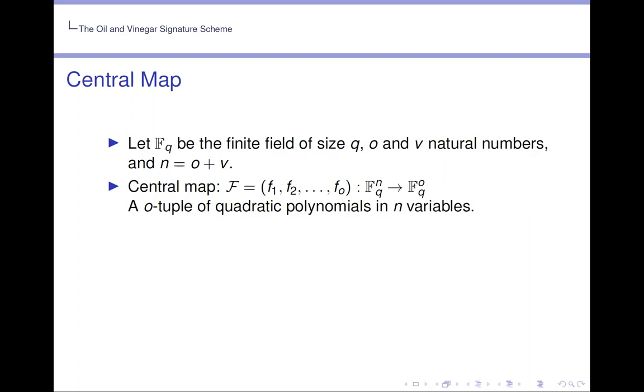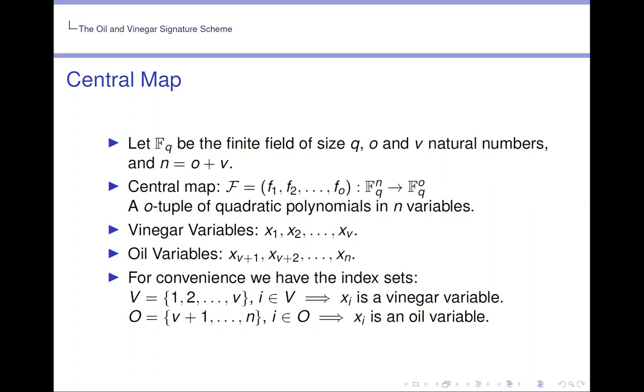Let F_q be the finite field of size q, and o and v natural numbers, and n equals o plus v. The central map, which is what we call F, is an o-tuple of quadratic polynomials in n variables. We divide the variables into two types: the vinegar variables x₁ to x_v, and the oil variables x_{v+1} to x_n. For convenience we have the index sets V equals {1, 2, ..., v} and O equals {v+1, ..., n}, so that x_i is a vinegar variable if i is in V, and x_i is an oil variable if i is in O.